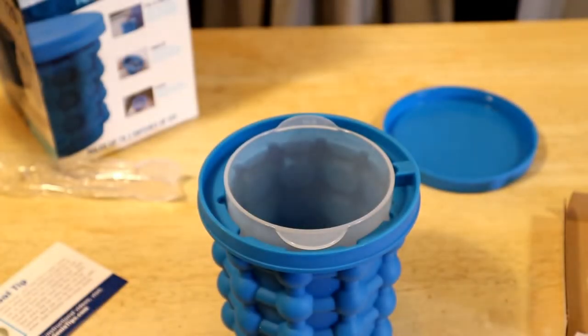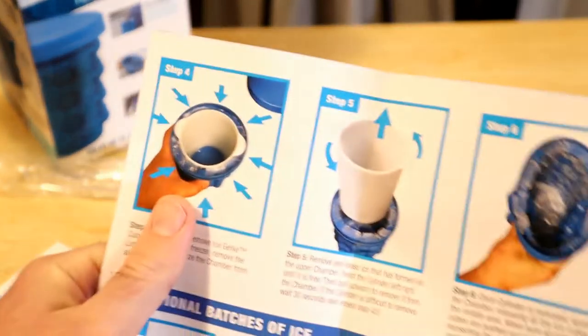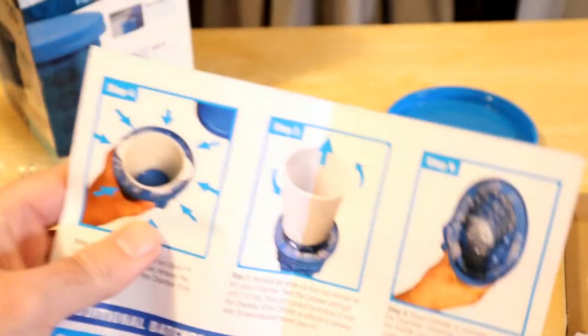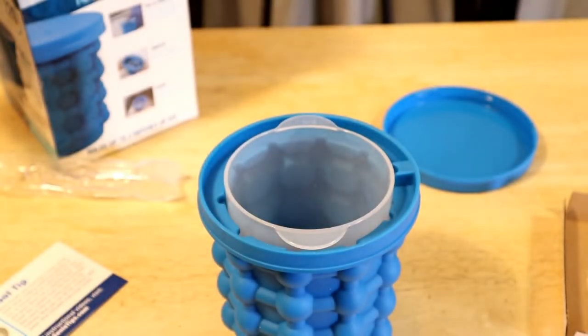And then, once it's done, once frozen, remove Ice Genie Cube Maker from the freezer. Remove lid, then firmly squeeze the chamber from all sides. You can see that. And then you lift the cylinder, and then you have awesome ice cubes. And you just squeeze them, release all the ice cubes.